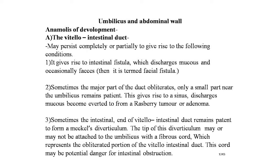This outgrowth constitutes the allantoenteric diverticulum. The proximal parts become incorporated into the hindgut, and the distal portion persists as the allantoic canal or allantois, communicating directly with the ventral surface of the hindgut. The portion of the hindgut caudal to this communication forms the ectodermal cloaca. At the end of pregnancy, the umbilical cord is about 50 cm in length. The umbilical arteries have strong muscular walls that contract to obliterate the vessels.